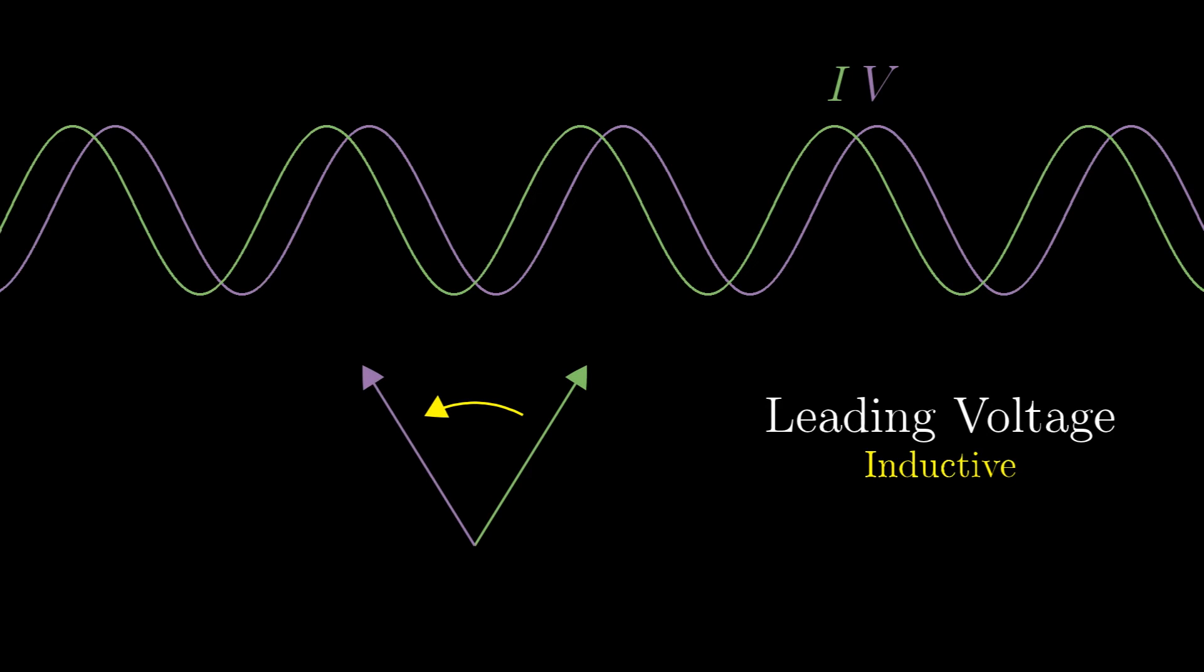Conversely, inductors slow the change in current, so they make the current fall behind the voltage. In this case, the voltage is said to be leading, and the line is inductive.